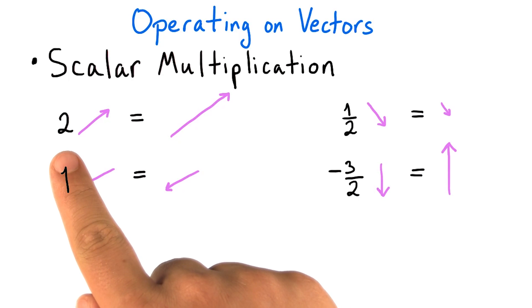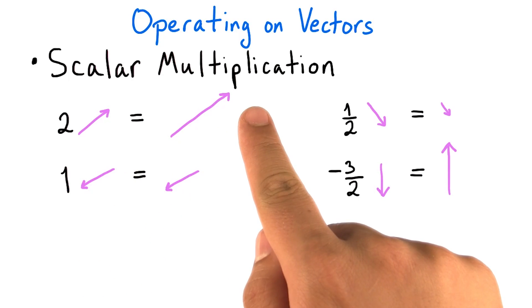Multiplying a vector by 2 doubles its length. Multiplying a vector by 1 keeps it at the same length. Multiplying a vector by 1/2 cuts its length in half. We can also multiply a vector by a negative number. This reverses the direction the arrow points in addition to possibly growing or shrinking the vector.